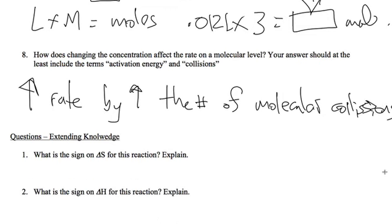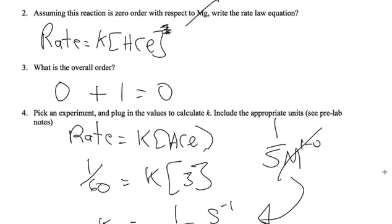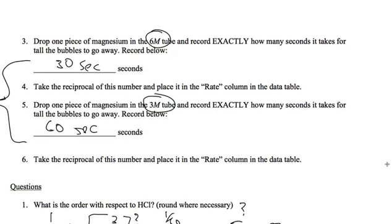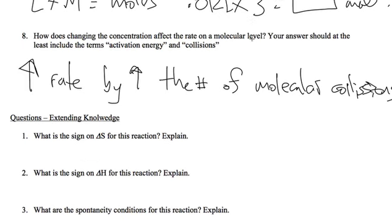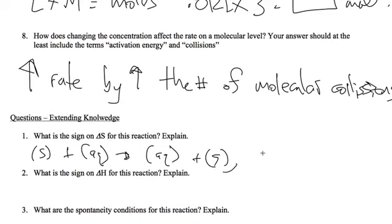What is the sign of delta S for this reaction? Let's go back to it. We have a solid and an aqueous going to an aqueous and a gas. So it gets messier. So you have solid plus aqueous goes to aqueous plus gas. Therefore, delta S is positive. Delta H is negative. It released heat.